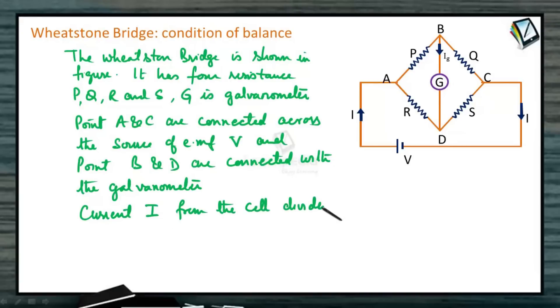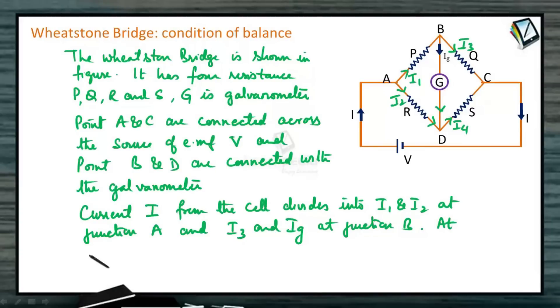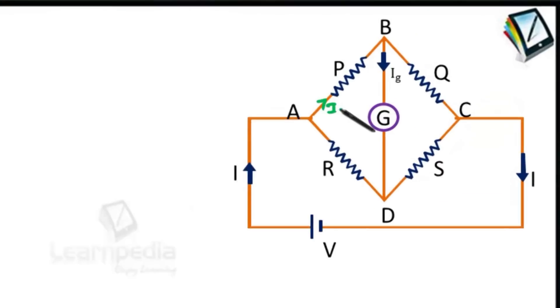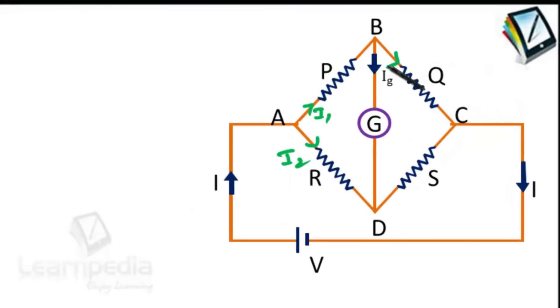Current I from the cell divides into I1 and I2 at junction A. I3 and IG, where IG is the current through galvanometer, are at junction B. This IG combines with I2 to give current I4 at junction C. I3 and I4 combine to give back the current I. We have taken this current as I1, this current as I2, this current as I3, this IG comes here, this current is I4, and I4 and I3 combine to give back the current I.